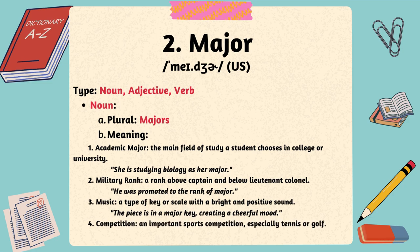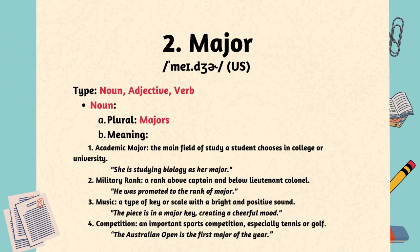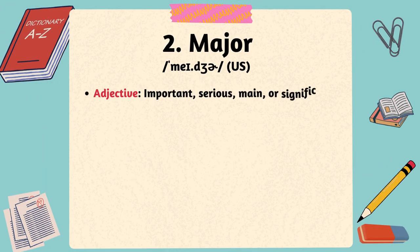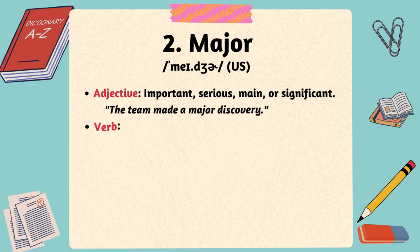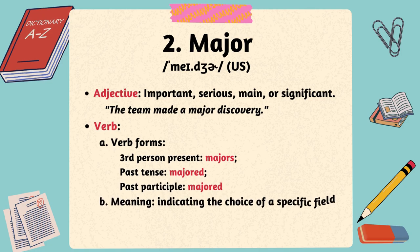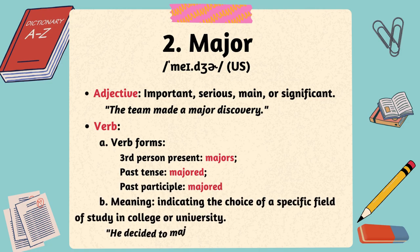Four, competition: an important sports competition, especially tennis or golf. The Australian Open is the first major of the year. The word major can be used as an adjective to express something important, serious, main, or significant. The team made a major discovery. The word major can be used as a verb to indicate the choice of a specific field of study in college or university. He decided to major in computer science.